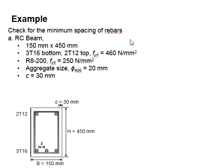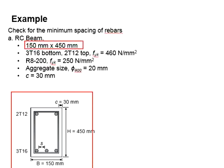Let us try some examples to determine the minimum spacing of reinforcement bar. This is a reinforced concrete beam, the dimension is 150 times 450.